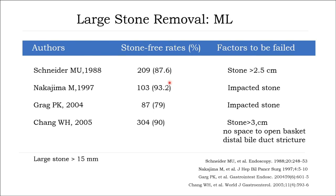Stone clearing by mechanical lithotripsy, from several studies, shows 80 to 90 percent success. However, factors that contribute to failure include impacted stone, no space to open the basket, distortion by stricture, and stone size larger than 2.5 to 3 cm.